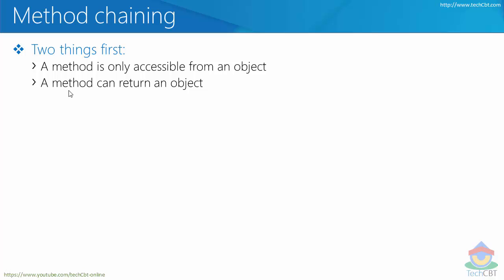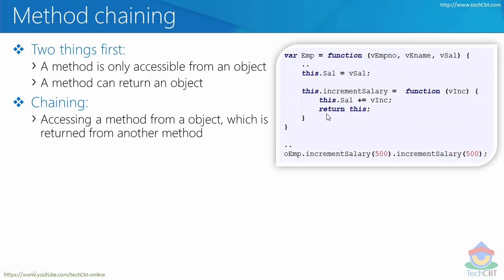Now, what exactly is chaining? Imagine I have a constructor function — a constructor function is very similar to a class. In this case, emp is a class which has a method called increment salary. This method essentially returns the current object. It accepts some value as a parameter, does some processing, and returns the current object using 'return this'.